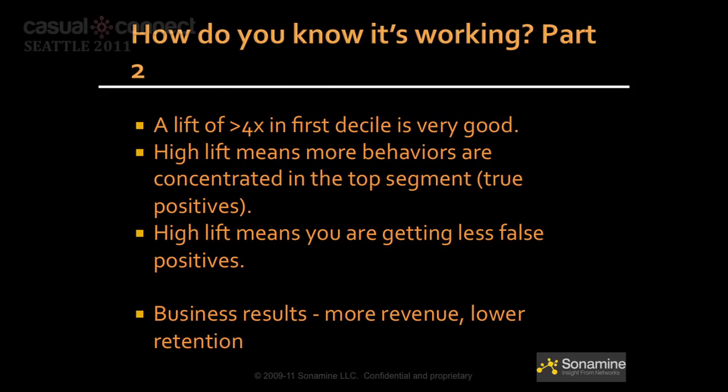How do you know predictives are working? A lift of four times or higher in the first decile is very good — meaning the density of converters in that slice is four times higher than the overall density. High lift means more red dots in the small pie and fewer false positives. On the business level, this translates to more revenue and lower churn, because you change your gameplay and promotion strategy based on the predictives.